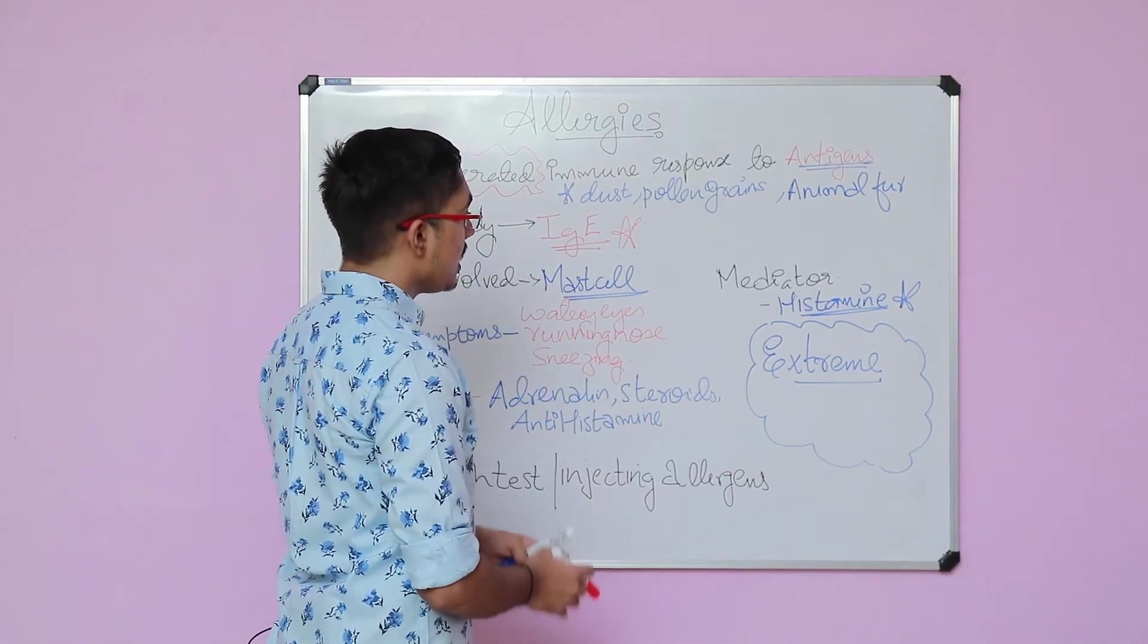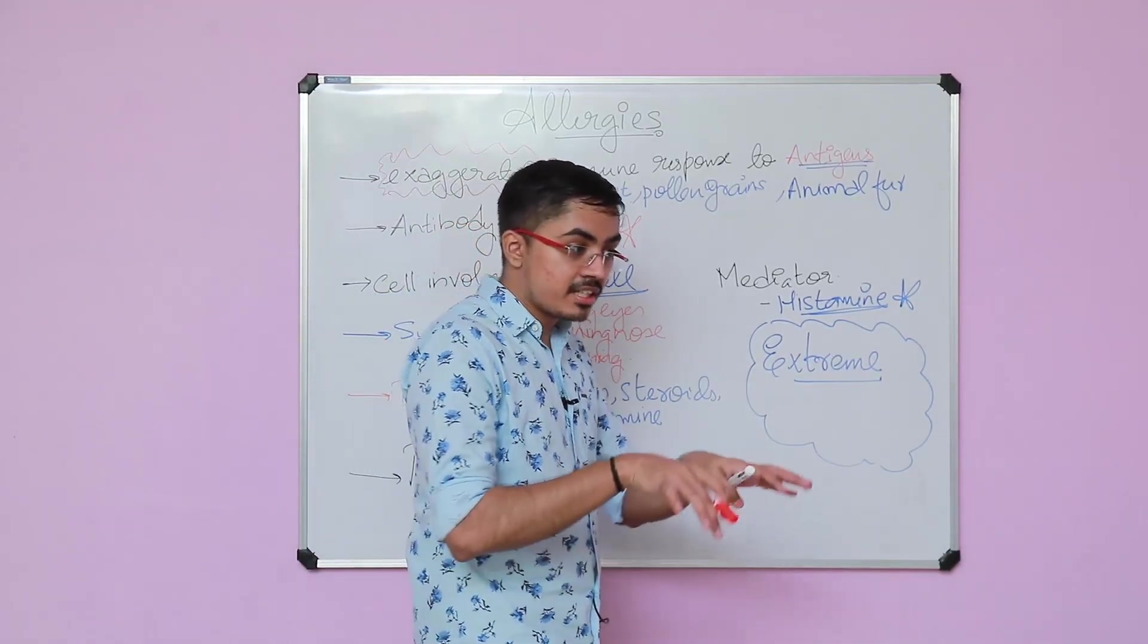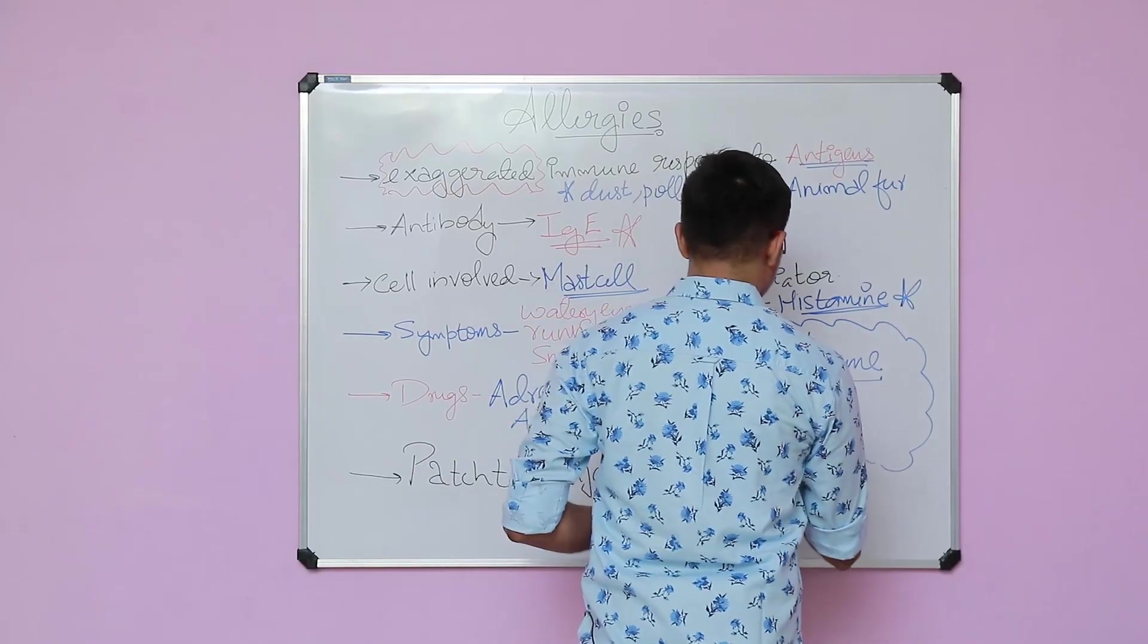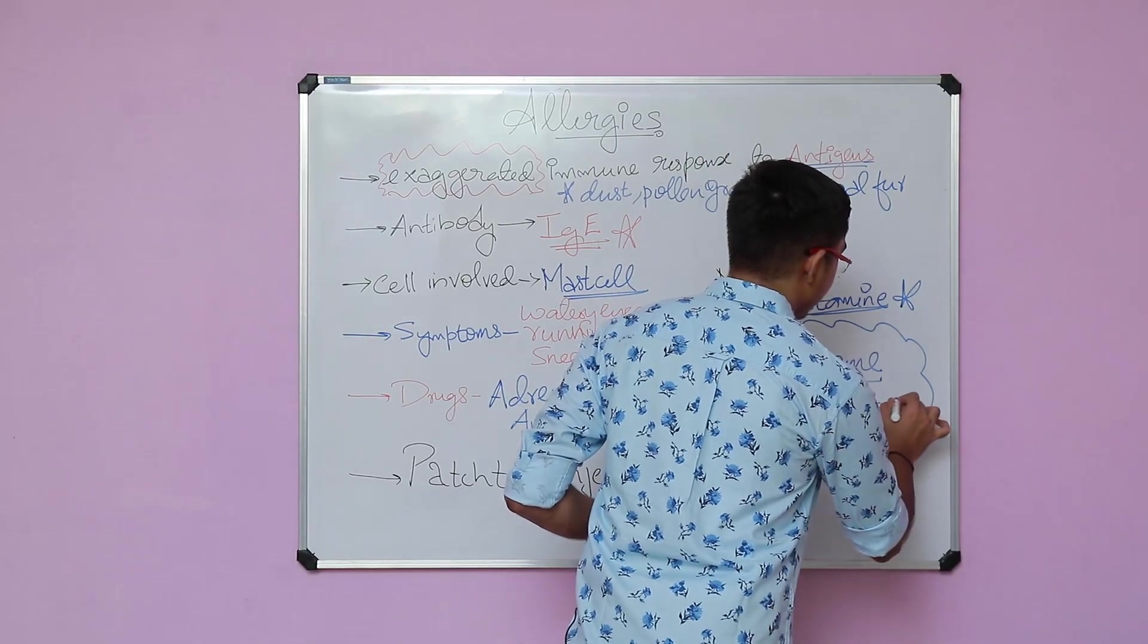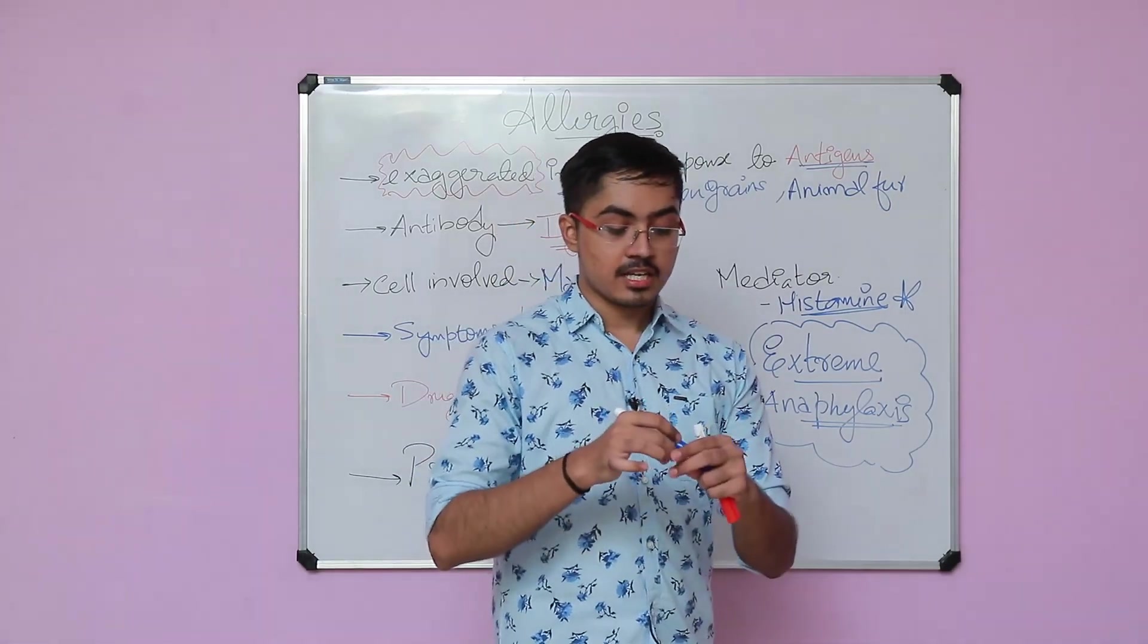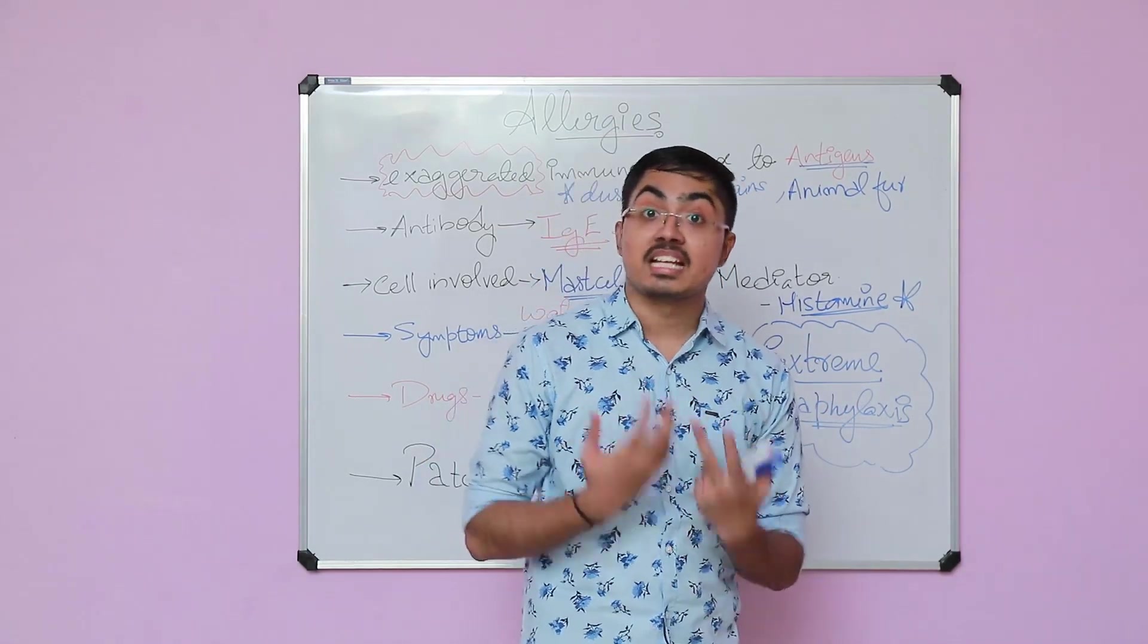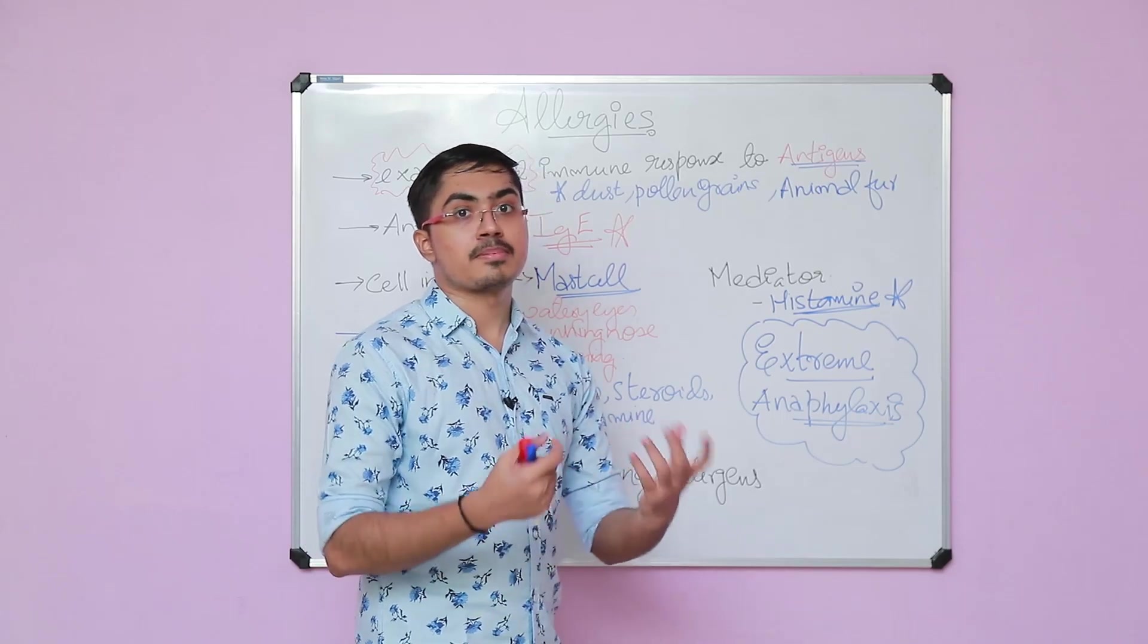If you talk about the extreme case of allergy, what happens is that the patient will collapse and will no longer be able to breathe at all. This is taught in all classes as anaphylaxis. Anaphylaxis is very serious. It is a medical emergency. The person will not be able to breathe and can die suddenly. Penicillin is one drug, the first antibiotic. The most important feature with respect to penicillin is that it can cause anaphylactic reaction.